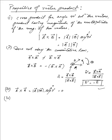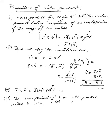Now suppose we have two vectors that are parallel or anti-parallel, so the angle between them is 0 degrees or 180 degrees. In that case, sin(0°) and sin(180°) both go to 0. So the cross product of parallel or anti-parallel vectors is always zero. For parallel vectors the angle is 0 degrees so sin(0) = 0, and for anti-parallel vectors the angle is 180 degrees and sin(180) = 0 as well.